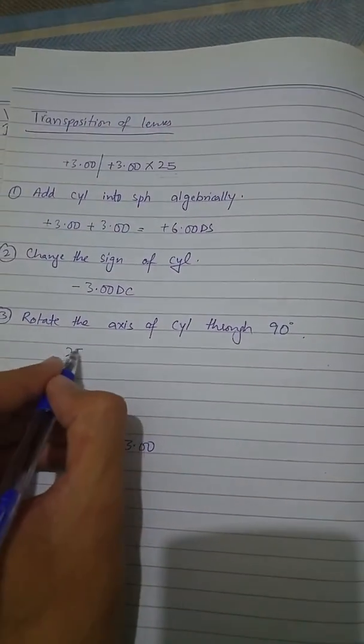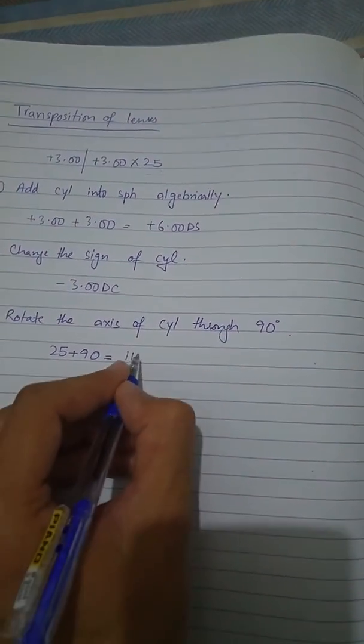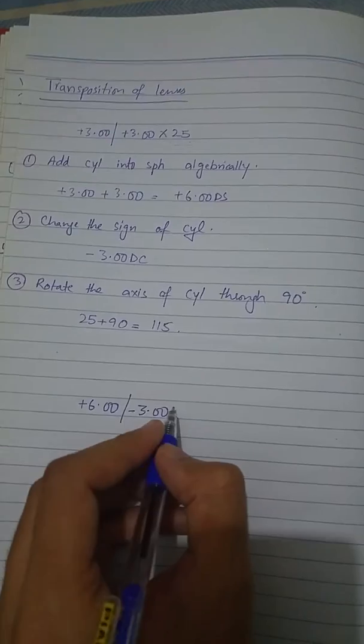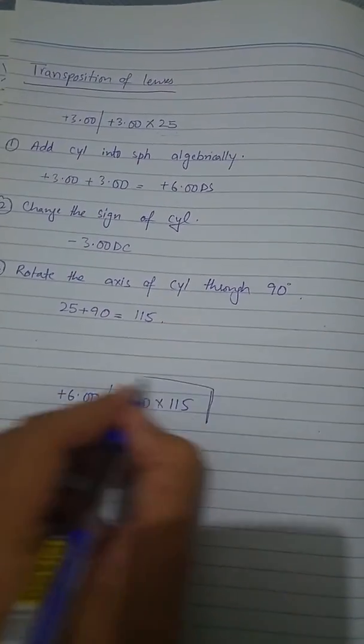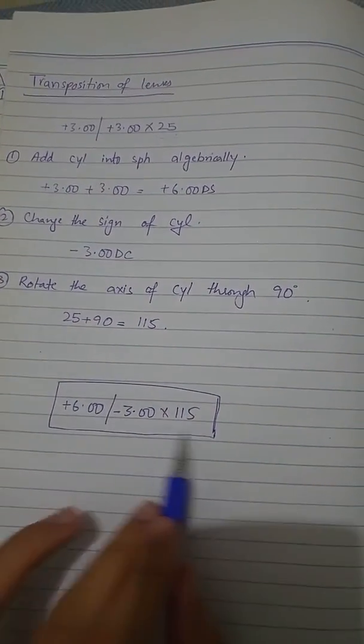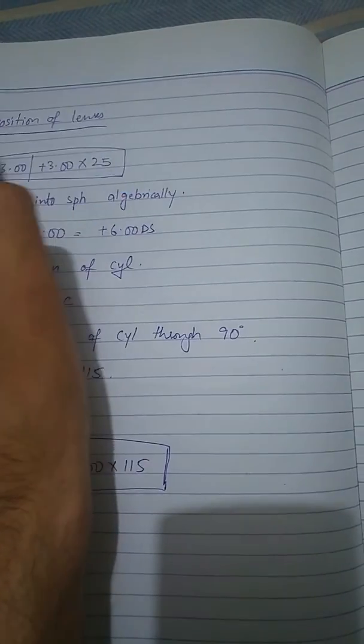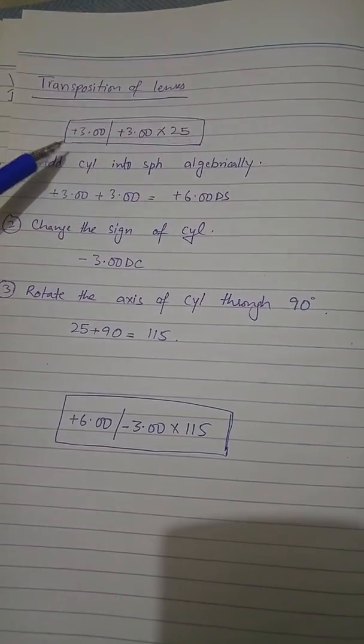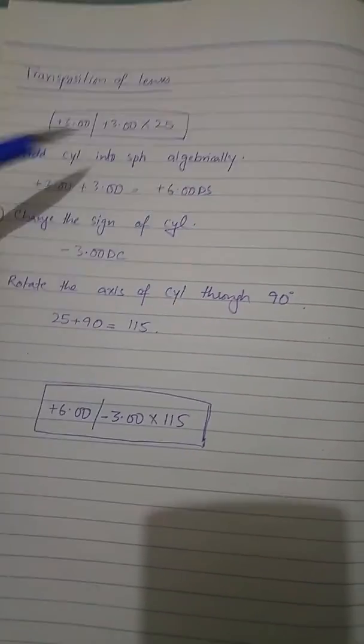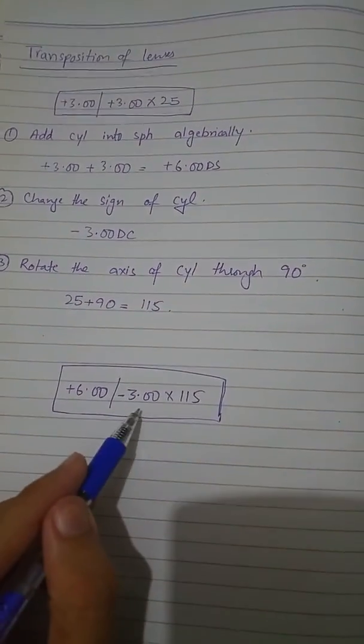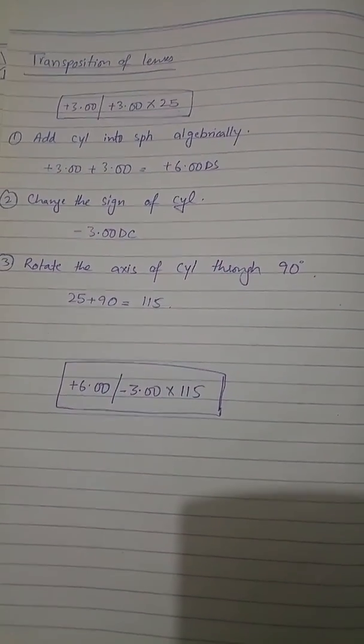We will add 90 to it, so the new axis is 115. This is the final result in transposition of the original prescription. We have now plus three sphere and plus three cylinder at 25, which is basically equivalent to plus six sphere and minus three cylinder at 115. That's all about transposition of lenses.